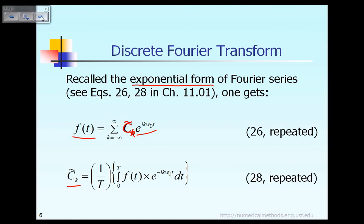Notice there's a few differences between equation 26 and equation 28. In equation 26 you can see the power of the exponential e is positive i k omega naught t, whereas in equation 28 the power of e is negative i k omega naught t. Another thing you have to recognize is in equation 26 you don't have a factor in the front, but here in equation 28 you have a factor of 1 over T.